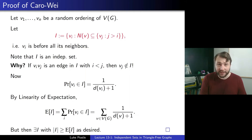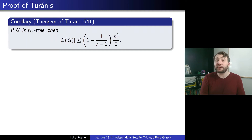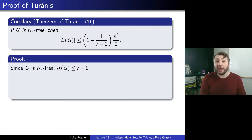That's the proof of the Karo-Way theorem. Intriguingly, it's also related to Turán's theorem, which we discussed last class. Recall Turán's theorem from 1941: if G is Kr-free, then the number of edges of G is at most (1 - 1/(r-1)) times n squared over 2.